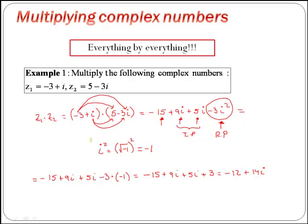It is important that you remember then that when multiplying complex numbers, you will need to use the fact that i squared is equal to minus 1.